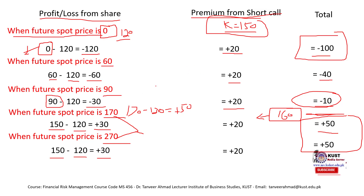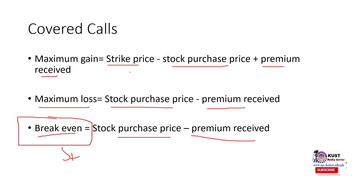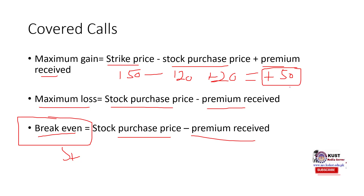Let me go back to the maximum profit and loss formulas. The formula for maximum gain: strike price minus stock purchase price plus premium. Strike price was 150, stock purchase price was 120, and premium was 20. Calculating: 150 minus 120 plus 20 equals plus 50 — this is what we found. You can directly calculate the maximum gain using this formula. Maximum loss: stock purchase price minus premium — 120 minus 20 equals minus 100. When the future spot price was zero, the maximum loss was indeed minus 100.